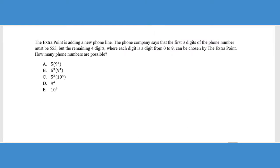Now we start to step up our game a little bit here and it gets a little bit more involved. It says the extra point is adding a new phone line. The phone company says that the first three digits of the phone number must be 555, but the remaining four digits where each digit is a digit from zero to nine can be chosen by the extra point. How many phone numbers are possible? So let's take a look at this. Let's go ahead and create our visual again, the first three numbers, and then you have a dash and then you have four numbers after that. But here's the problem. These first three numbers must be 555. That is one very specific number.